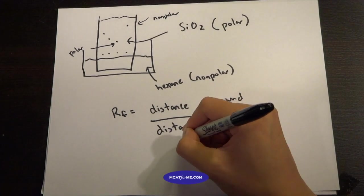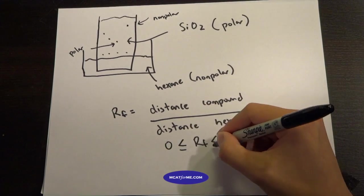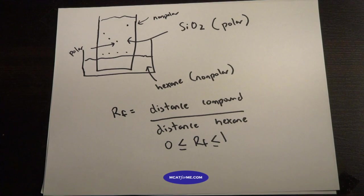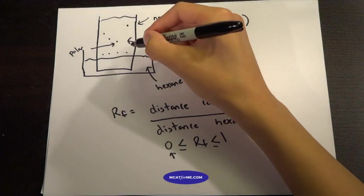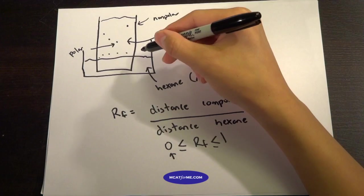So obviously this RF range has to be between 0 and 1, right? It could go all the way to the top or it could go nowhere at all. So if it has an RF value of 0, it means it would be all the way down at the bottom. It didn't move anywhere.